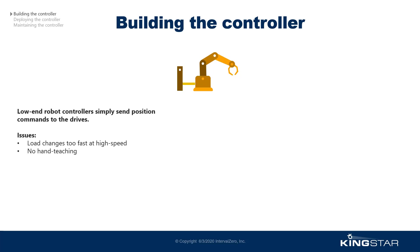Hand teaching means that instead of writing a complex program to find and adapt the exact position, you can now directly grab the robot arm, move it around to a position in hand teaching mode, and then record the position as a target. This makes the configuration of the robot application much faster and easier. But this also requires detection of this move of the hand, and that is not possible with position control inside the drive, because when the hand tries to move, the drive will automatically force it back to position.